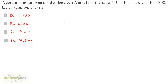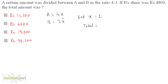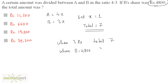A certain amount was divided between A and B in the ratio 4 is to 3. If B's share was 4,800, the total amount was? The ratio of A to B is 4 is to 3, so we write A's amount as 4x and B's amount as 3x. When x equals 1, A has 4 and B has 3, giving a total of 7.